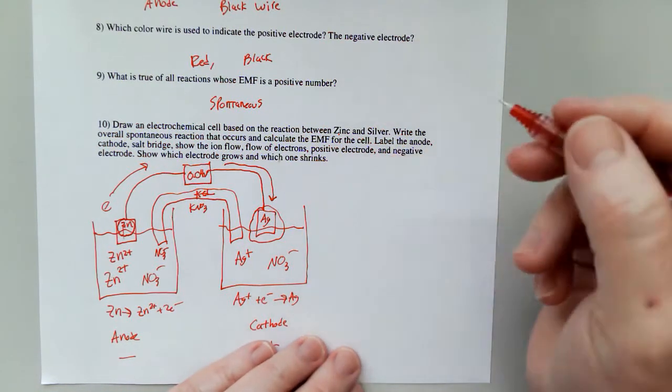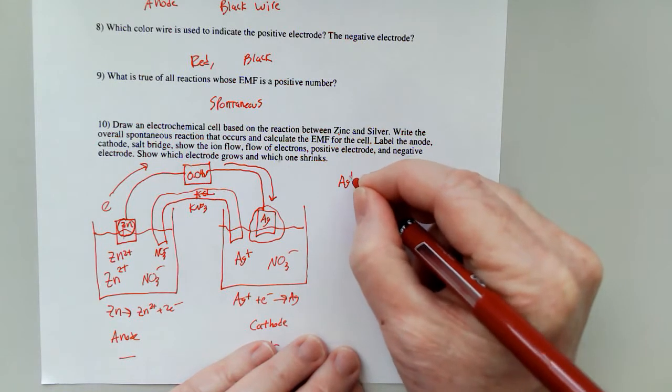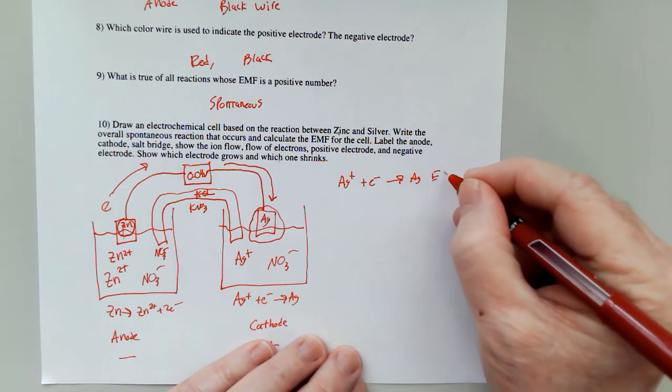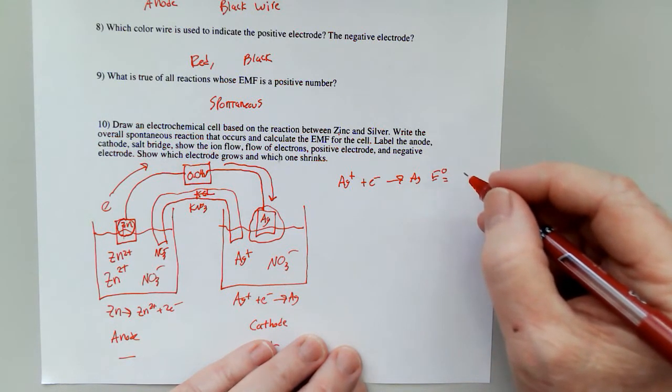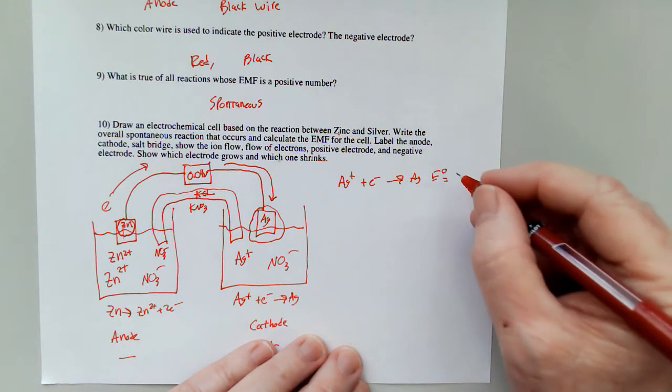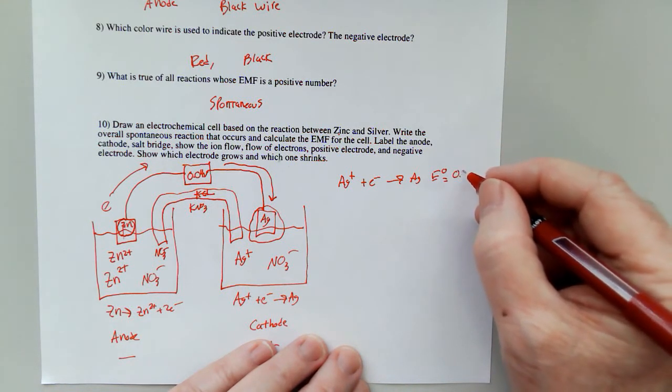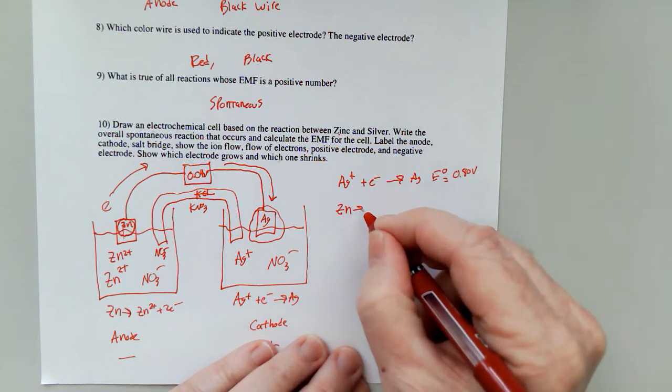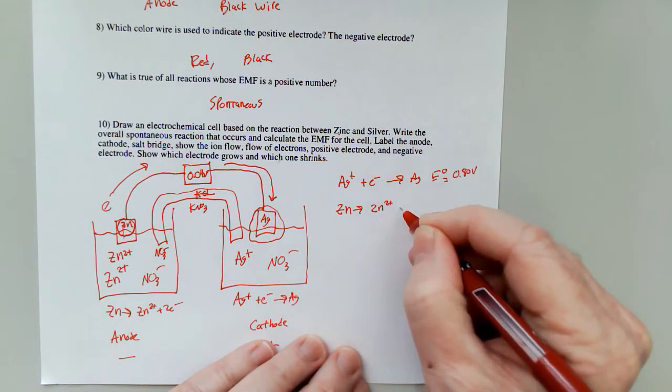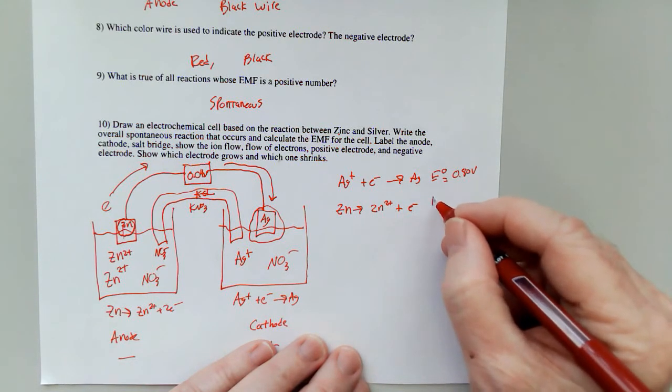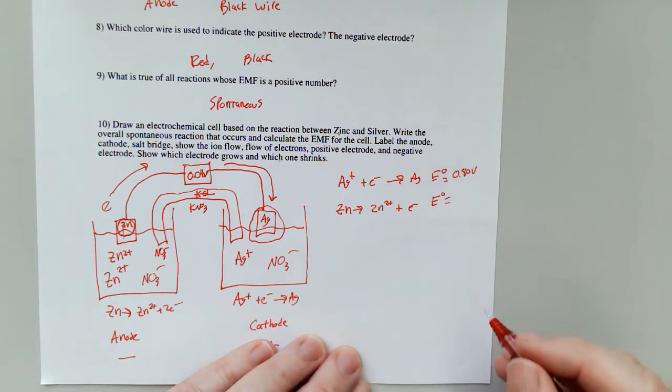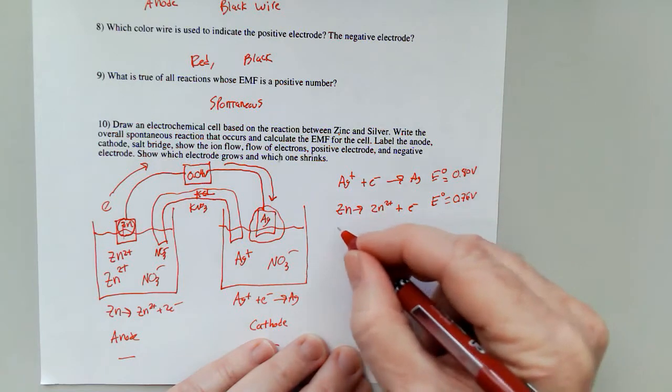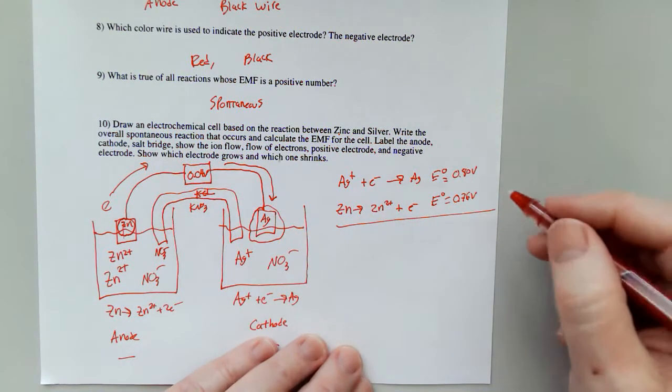Now, if we go to a table of EMF values, Ag plus plus an electron forms Ag and E0 equals, in this case, that would be 0.80 volts. And then zinc goes to zinc 2+ plus an electron. E0 is going to equal, I think that's 0.76 volts. So I added that one up wrong.